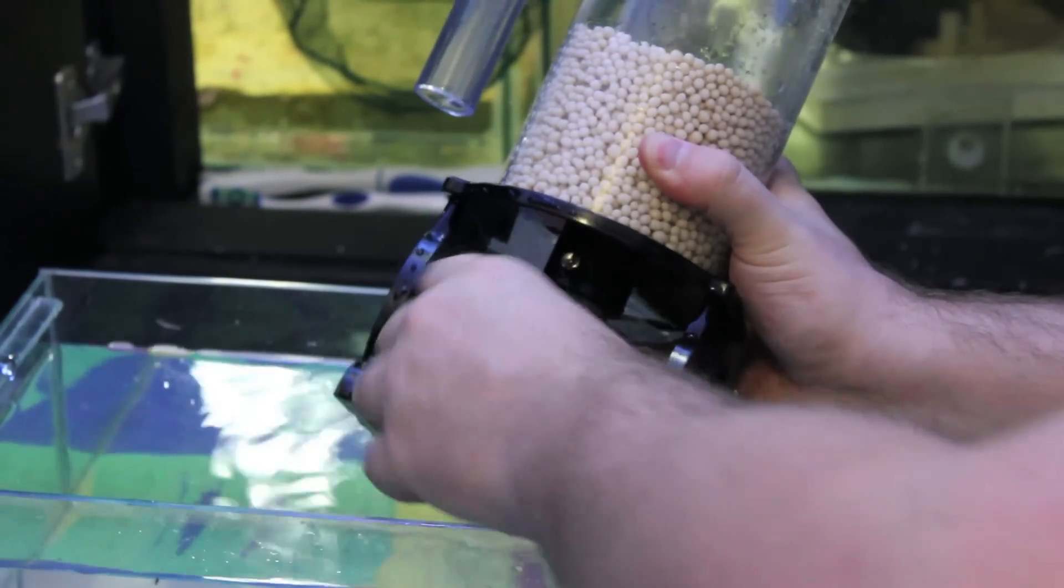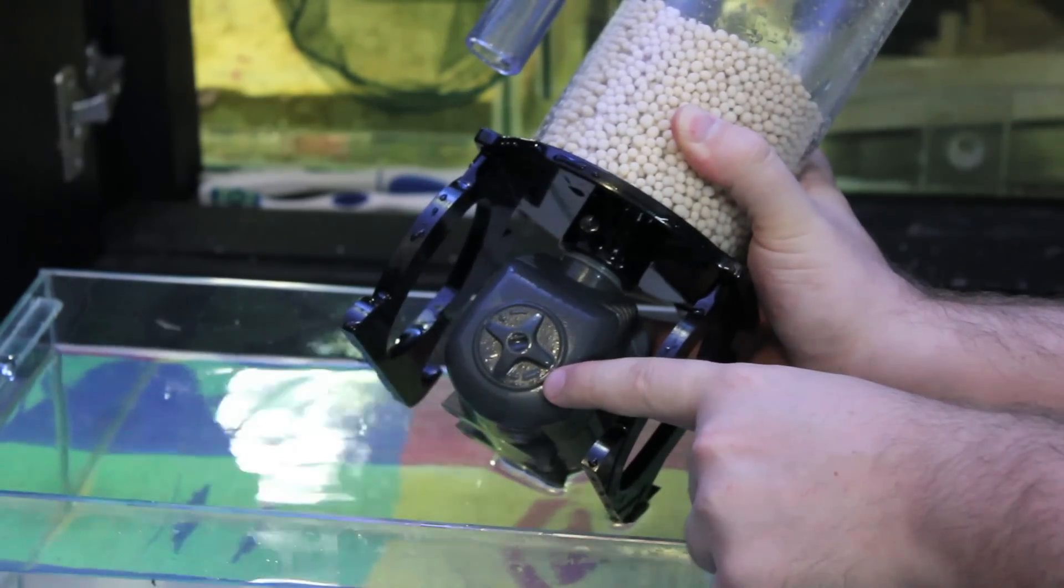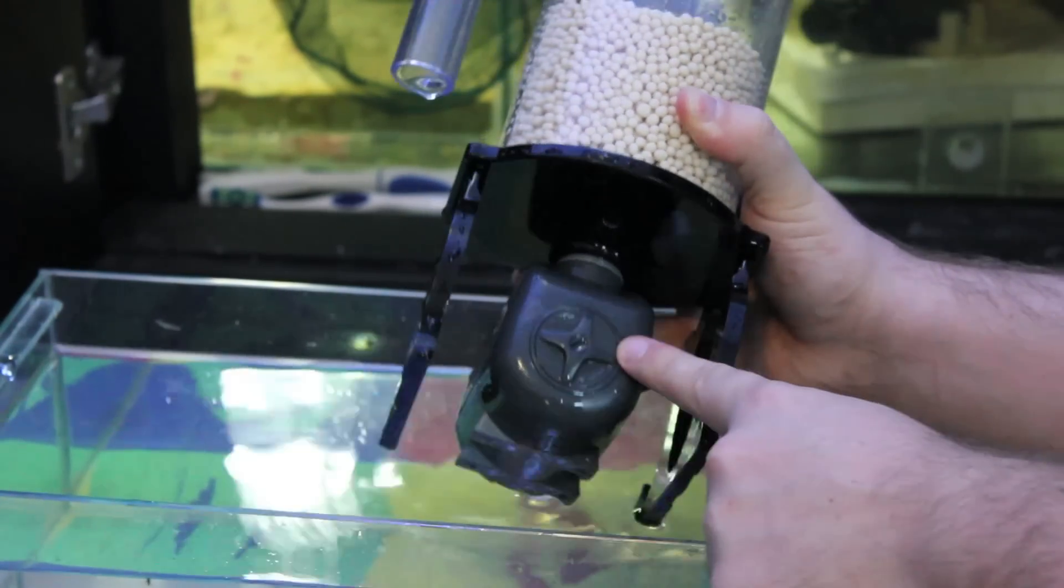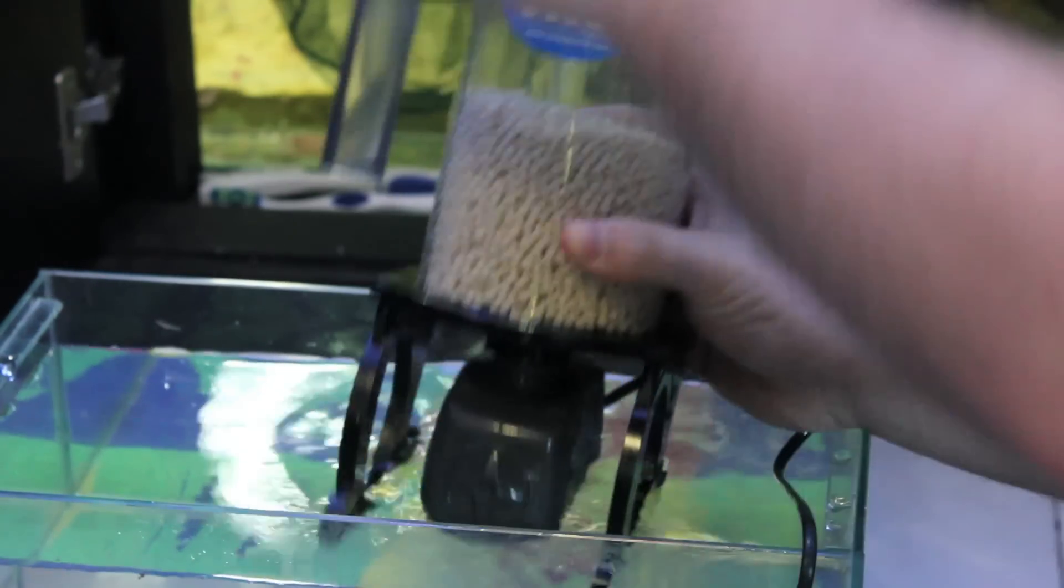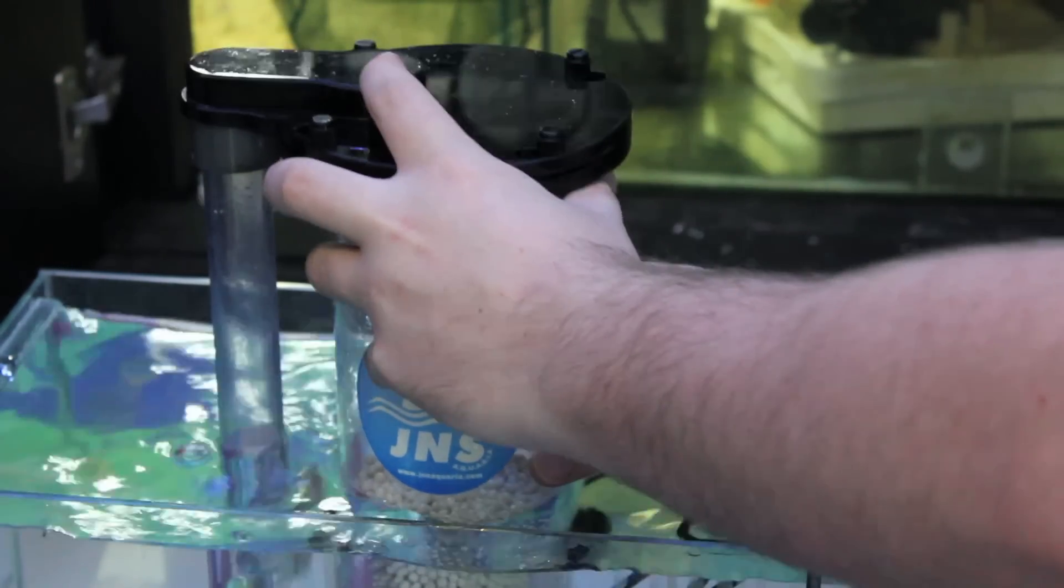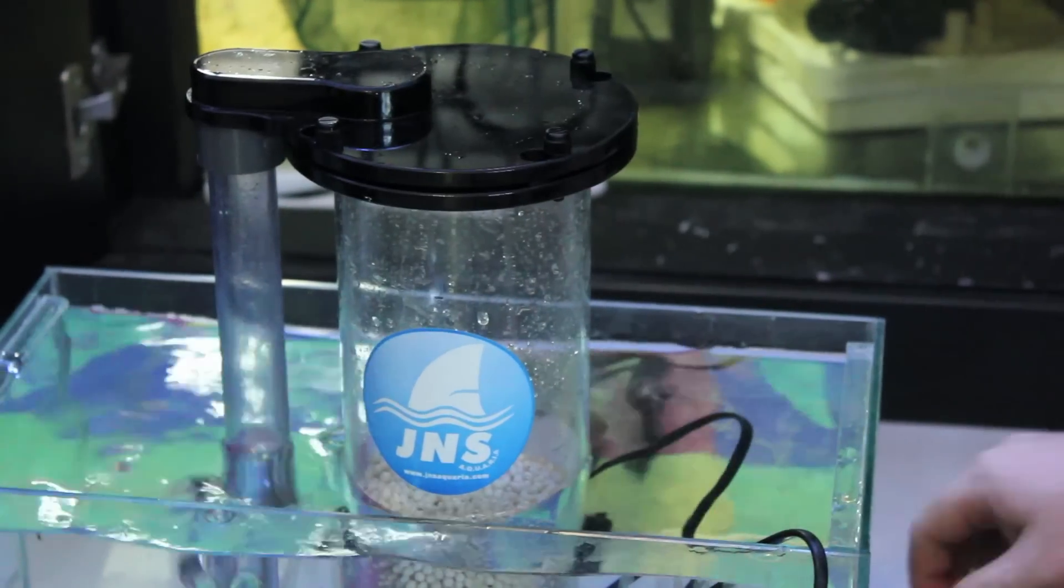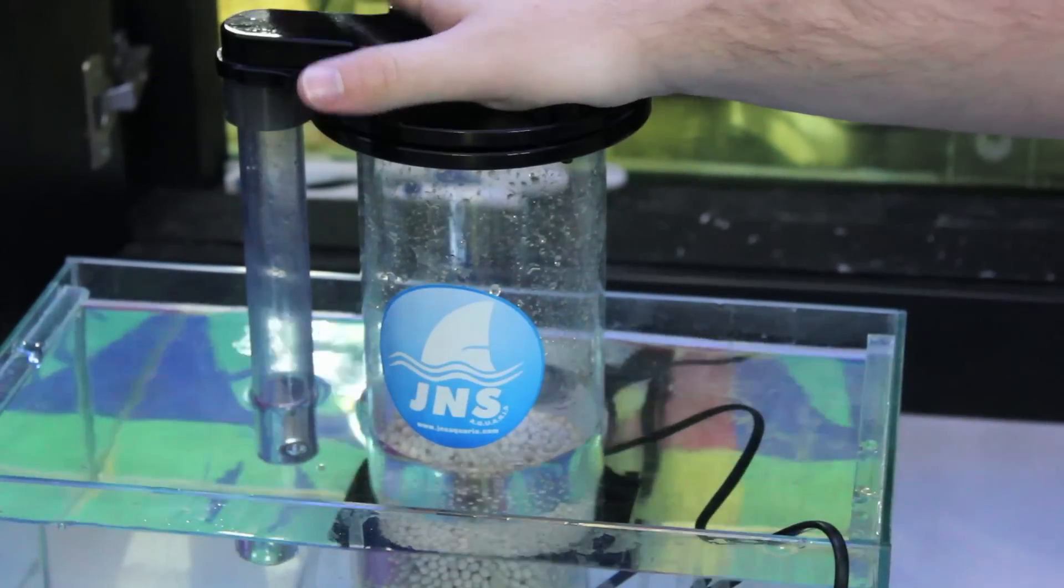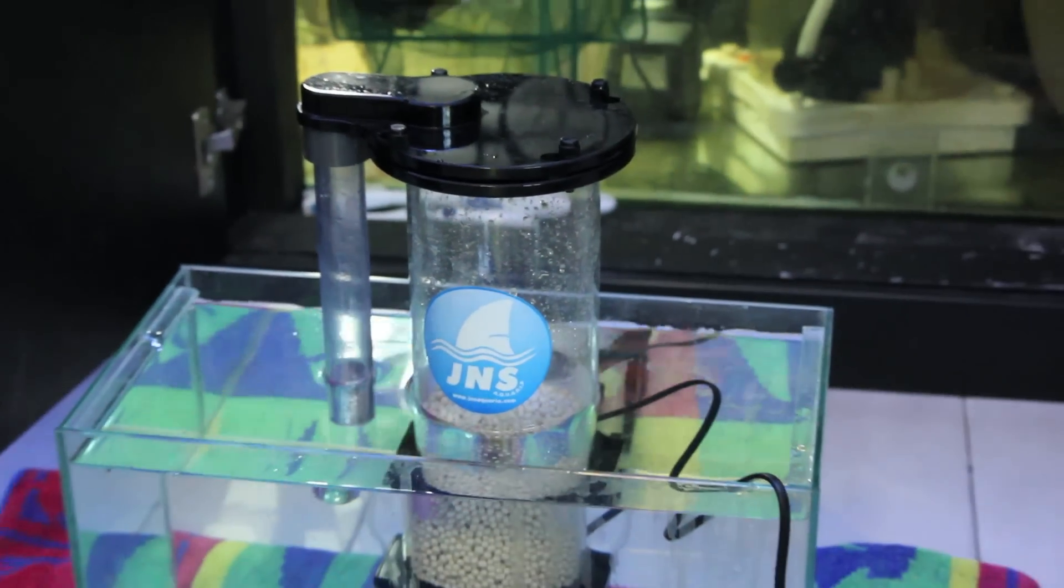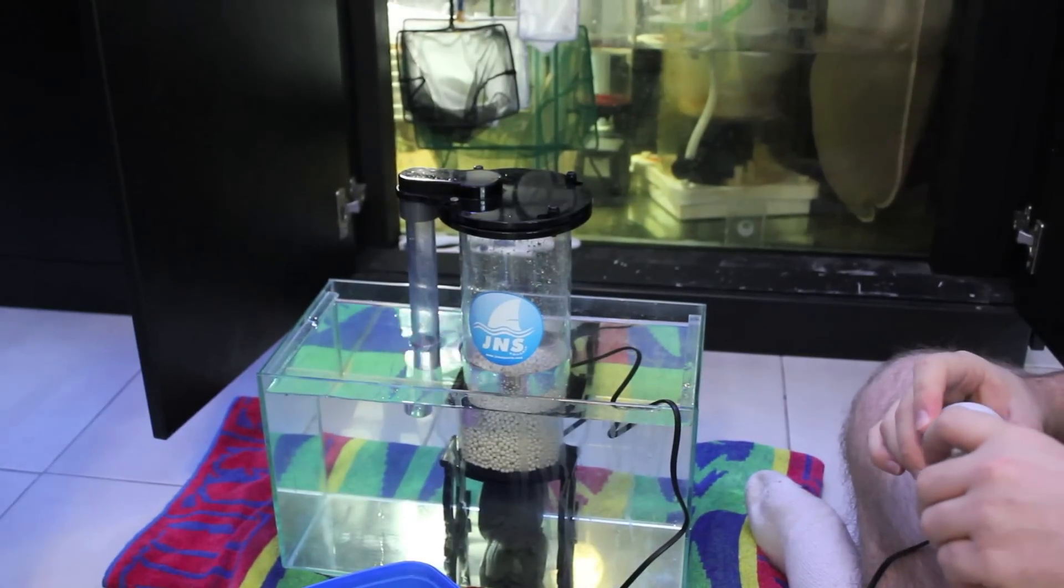What I do is I turn it all the way down to the lower setting, which is in this direction, clockwise. Whack the reactor in the tank. It's probably best to give it a quick run outside of the tank just to remove any additional biofilm or plastics that you don't want in your tank.